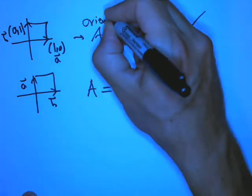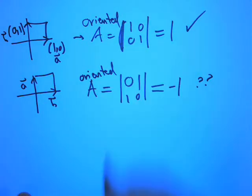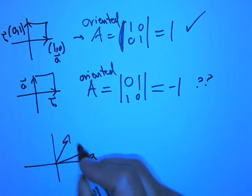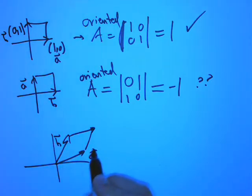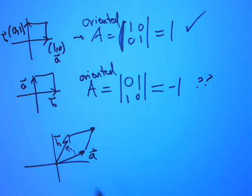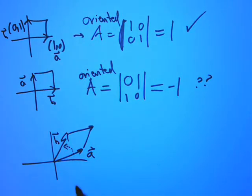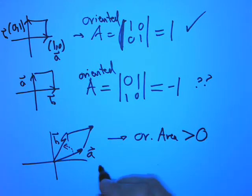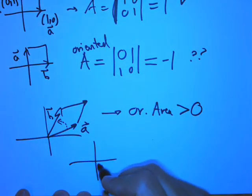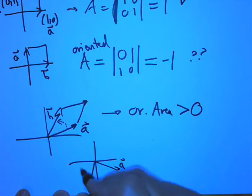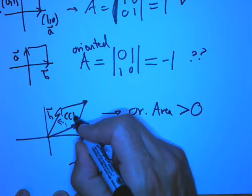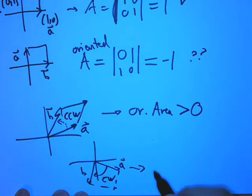And the rule is that if, when you write down, when you look at your parallelogram, if it looks like this, where going from A to B is a counterclockwise rotation, that's always what we consider to be the positive sense of a rotation, then that means that this oriented area is positive. But if, if you write it the other way, like here's A and here's B and here's your parallelogram and that that rotation is a clockwise rotation, that was CCW, this is clockwise, then we say the oriented area is less than 0.